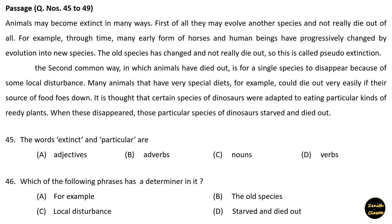Next we have one more passage. Questions number 45 to 49. Passage: Animals may become extinct in many ways. First, they may evolve into another species and not really die out at all. For example, through time many early forms of horses and human beings have progressively changed by evolution into new species. The old species has changed and not really died out — this is called pseudo-extinction.